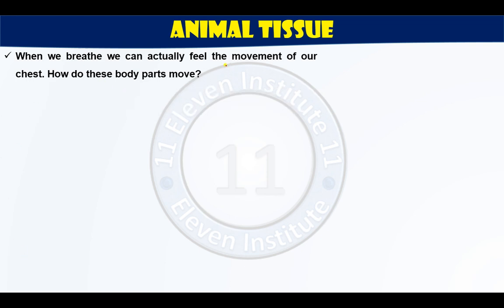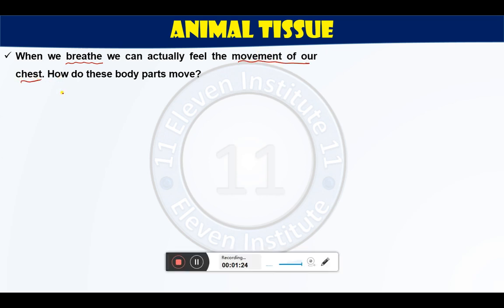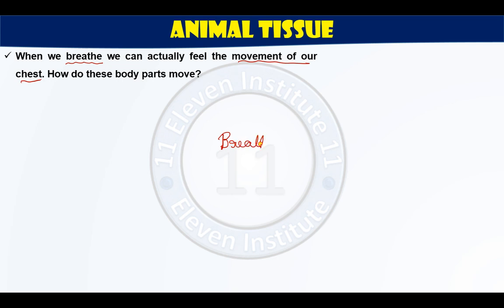When we breathe, we actually feel the movement of our chest. If you can't understand, just try to breathe now while watching this video — try to inhale and then exhale. You can see your body is moving. When you inhale and exhale, the part of the chest, the torso, is moving — it is growing, it is declining. How does this movement occur? Which type of cells are responsible for this movement? They move due to the presence of muscles.